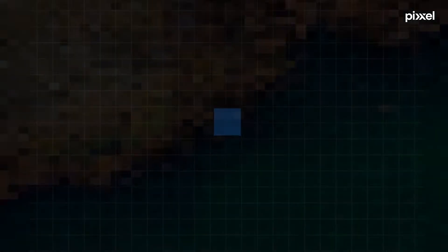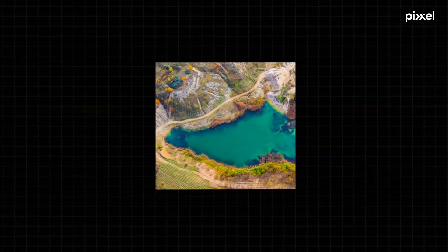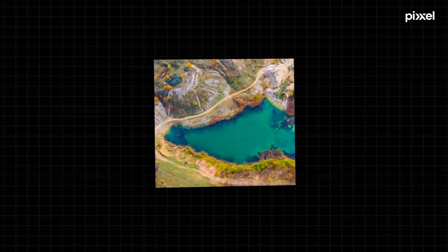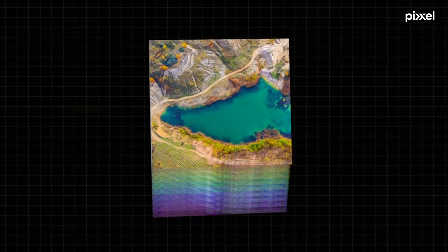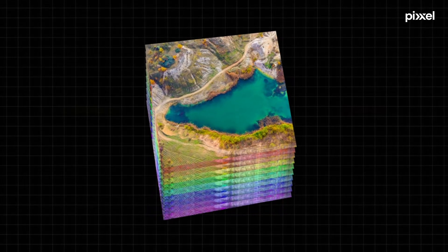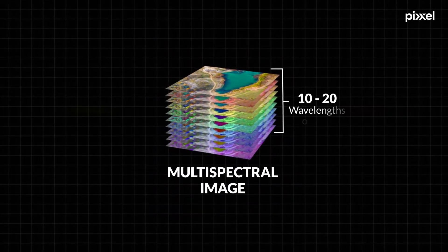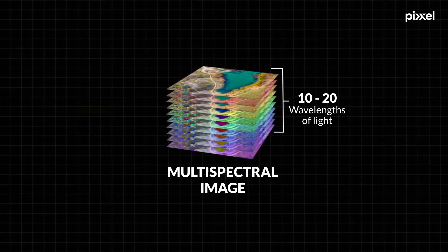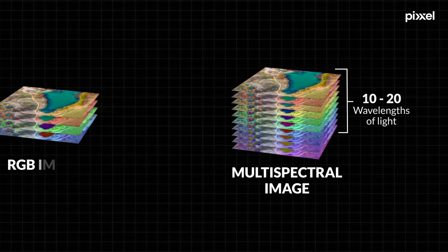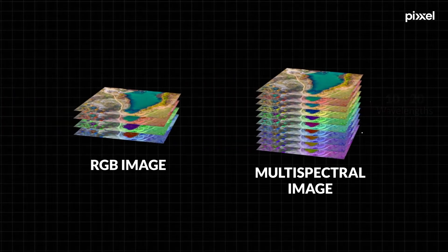And therefore, what we see is the combined value of these three wavelengths. The next step is multispectral imaging, where we can get 10 to 20 wavelengths of light, having more information than a normal RGB image.